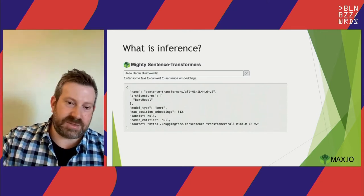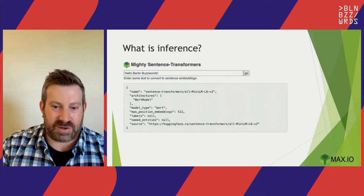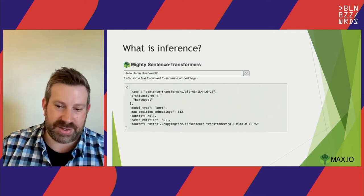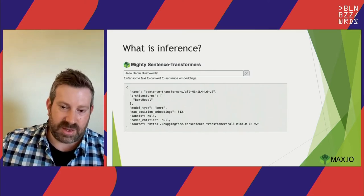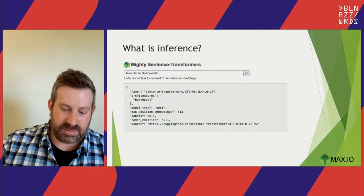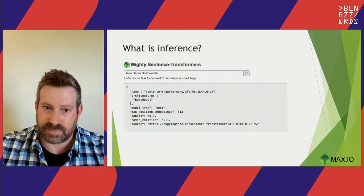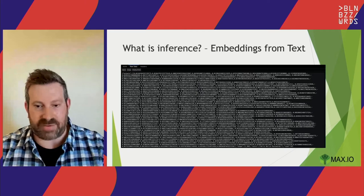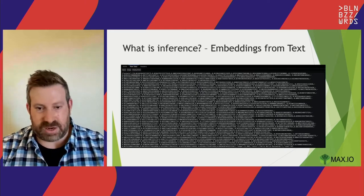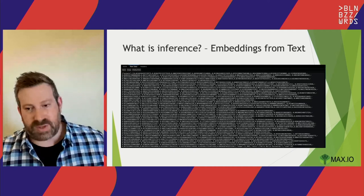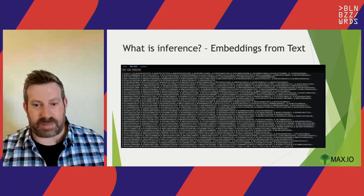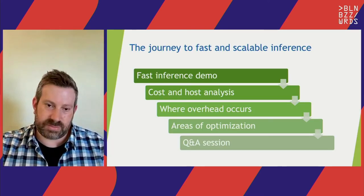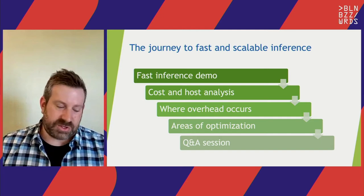So, what is inference? We take some text — in this case 'Hello Berlin Buzzwords' — and pass it into a model. We have to tokenize the text, then provide those tokenized IDs as inputs to the model, which produces a result. That result is essentially an array of floating point numbers — a big vector. That's basically what we're talking about: how do you go from text to getting these vectors? I'm going to show a demo, and then talk about it.